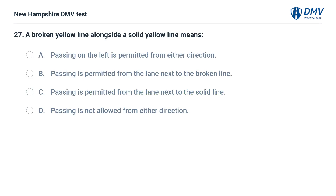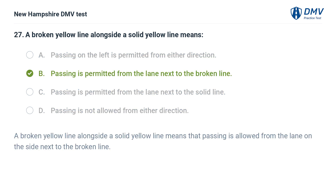A broken yellow line alongside a solid yellow line means: A) passing on the left is permitted from either direction, B) passing is permitted from the lane next to the broken line, C) passing is permitted from the lane next to the solid line, D) passing is not allowed from either direction. The answer is B. A broken yellow line alongside a solid yellow line means that passing is allowed from the lane on the side next to the broken line.